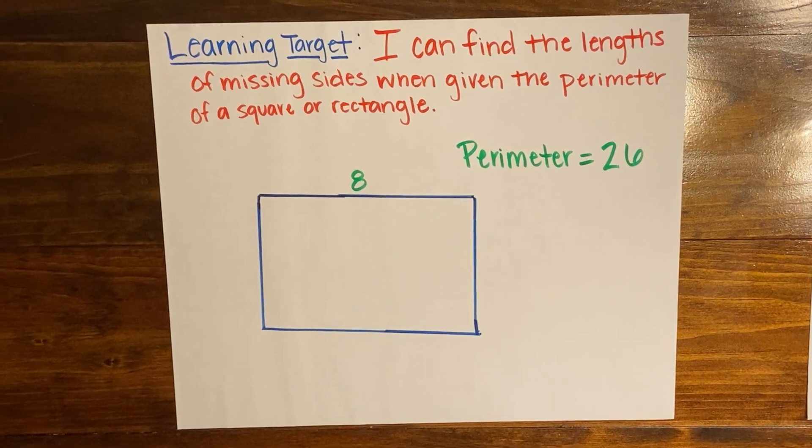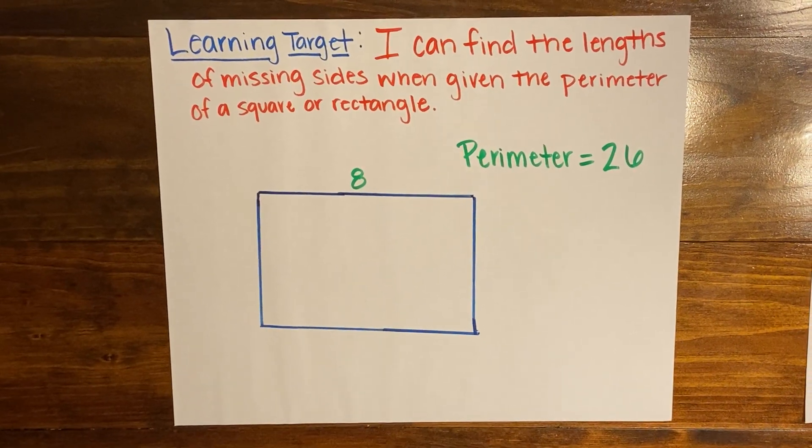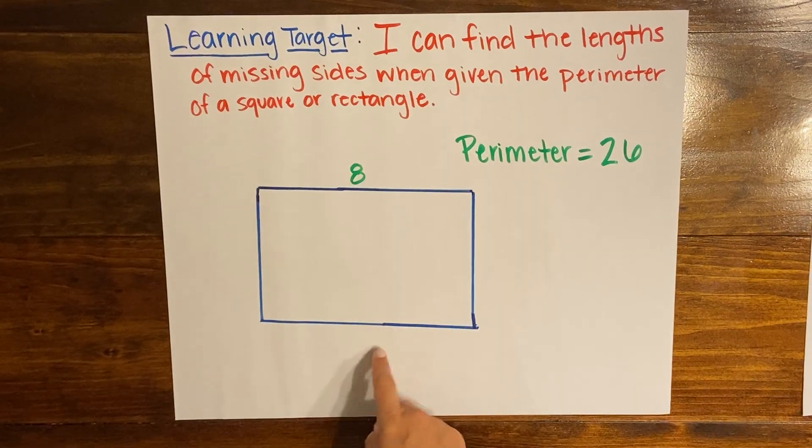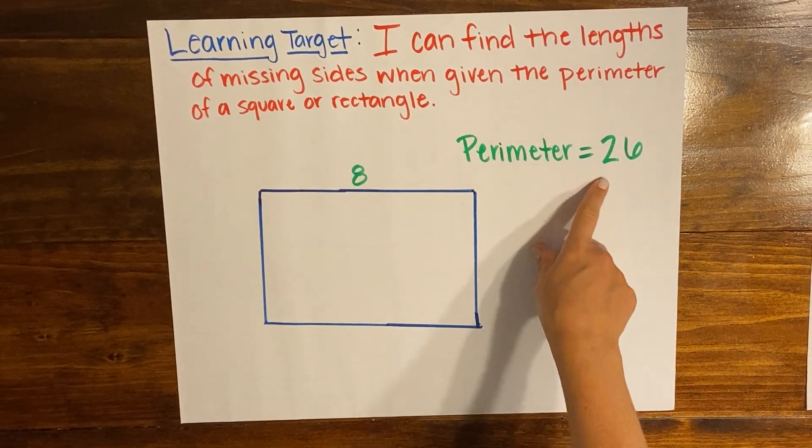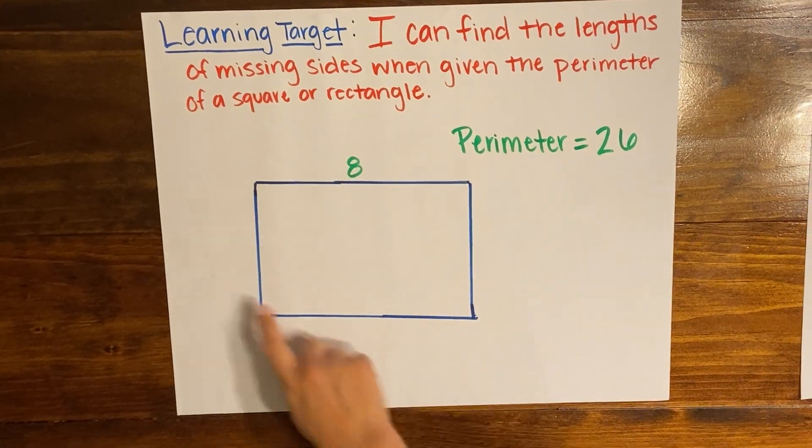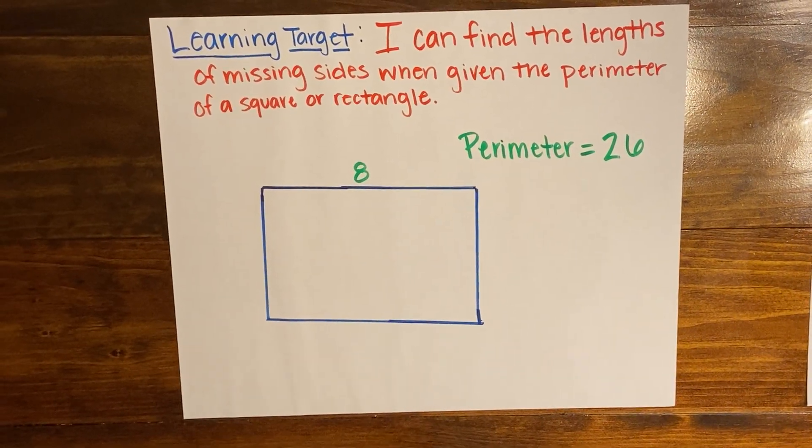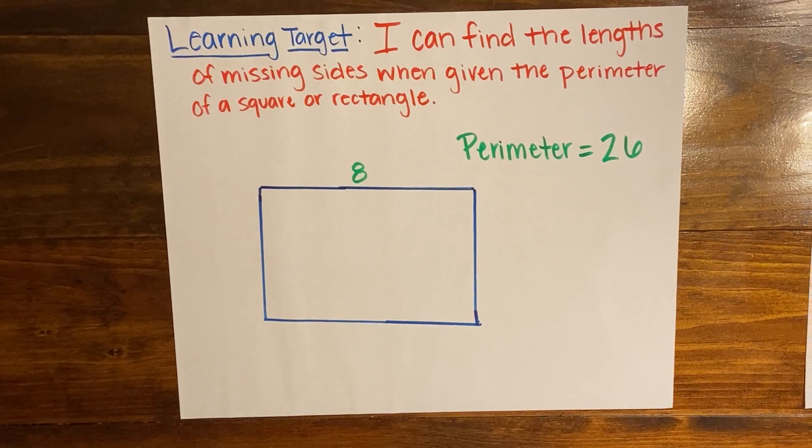So you've been working with perimeter and you've been working with a strategy of adding up all of the sides in order to find the perimeter. But today we're gonna look at what happens when you're given a perimeter and you have to find the missing sides of the shape that you're given. And we're gonna look at squares and rectangles.